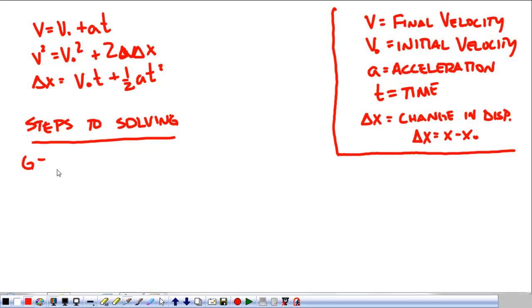Steps to solving equations. First, we have the GUESS method: G, U, E, S, S. G, it's our givens. You write down all your givens. So you say v equals whatever v equals, if that's what you're given.